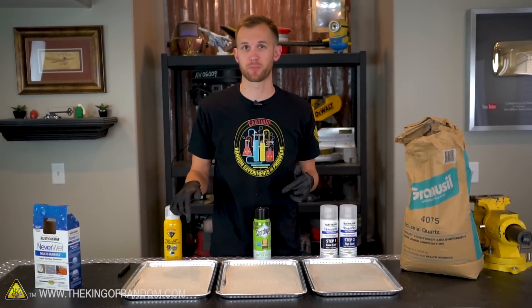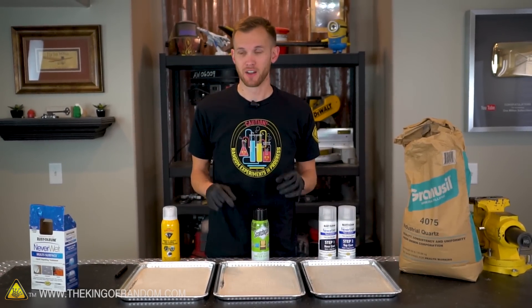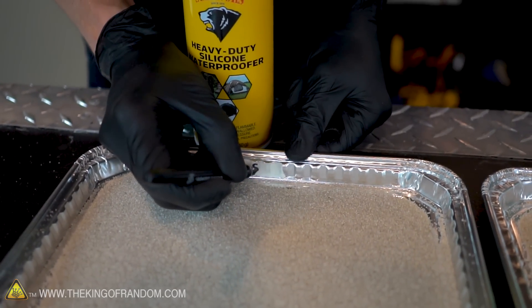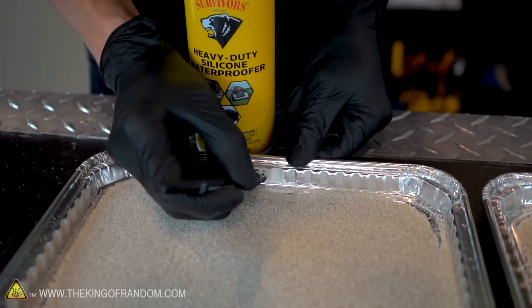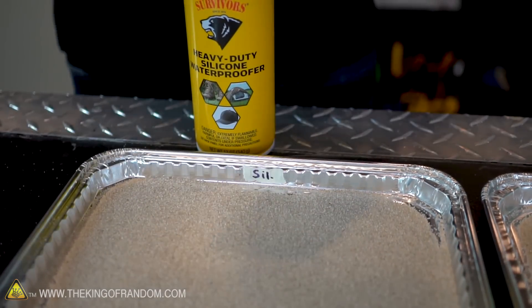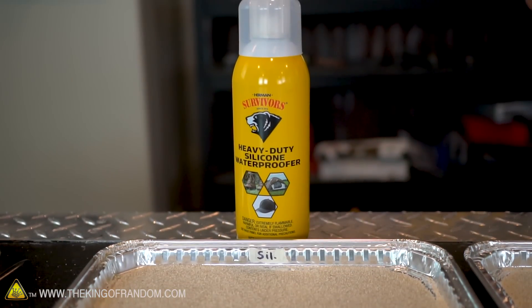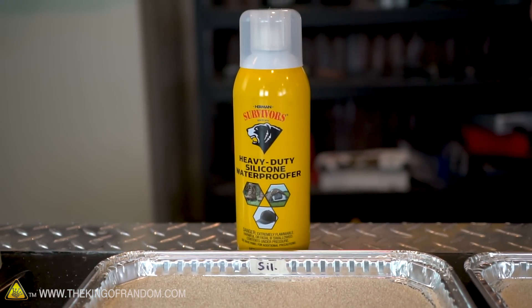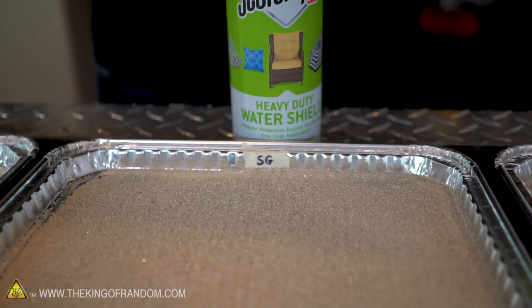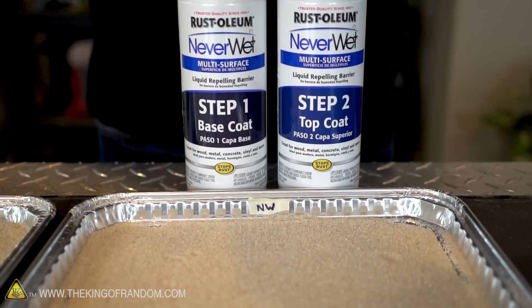Now it's time to apply each of our water coating sprays to the three batches of sand. First let's label each pan with its corresponding type of waterproofing so that we can keep track of which one's going on which. This is silicone so we'll put sil for silicone, SG for Scotch guard, NW for Neverwet.